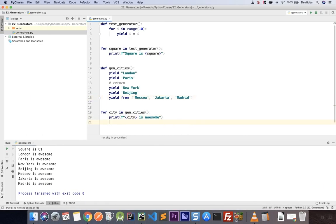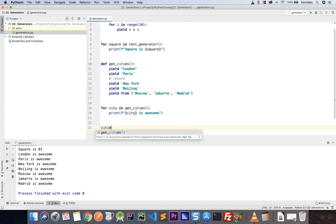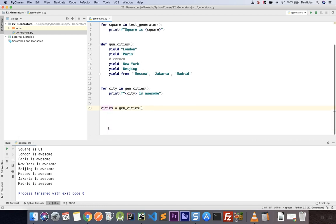So here we have our cities variable, and I'm going to give the generator into the cities variable. I'm going to put it in the variable. And then if I say print next of cities, and I duplicate that three times, if I run that, I will get London, Paris, and New York.